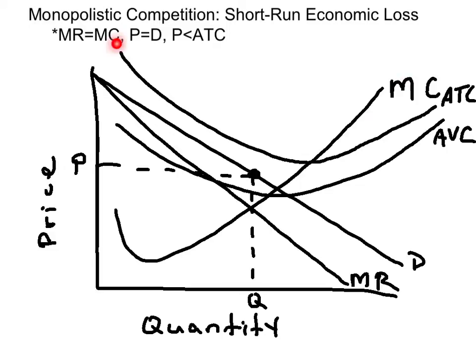We have an ATC curve that is above the price. It hits its minimum point when it intersects the marginal cost curve and then rises. Then we have an AVC that is below the price, hits its minimum on the marginal cost curve, and then rises as well. It gets closer and closer to the ATC curve as output increases.